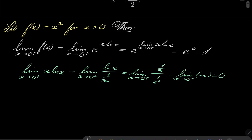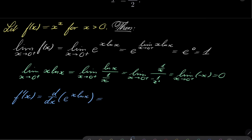Now let's investigate the derivative of our function f' of x. Once again it's the derivative of e to the power x natural log of x. So it's e to the power x natural log of x, and using the chain rule we have natural log of x plus x times the derivative of natural log of x, which is 1 over x. And e to the power x natural log of x is again x to the power of x times natural log of x plus 1.